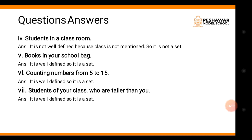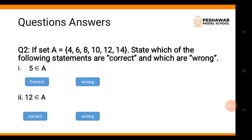Number five: books in your school bag — this is well-defined because we can list the books in a bag, so it is a set. Number six: counting numbers from five to fifteen — well-defined and distinct, so {5, 6, 7, ..., 15} is a set. Number seven: students of your class who are taller than you — well-defined, hence it is a set.